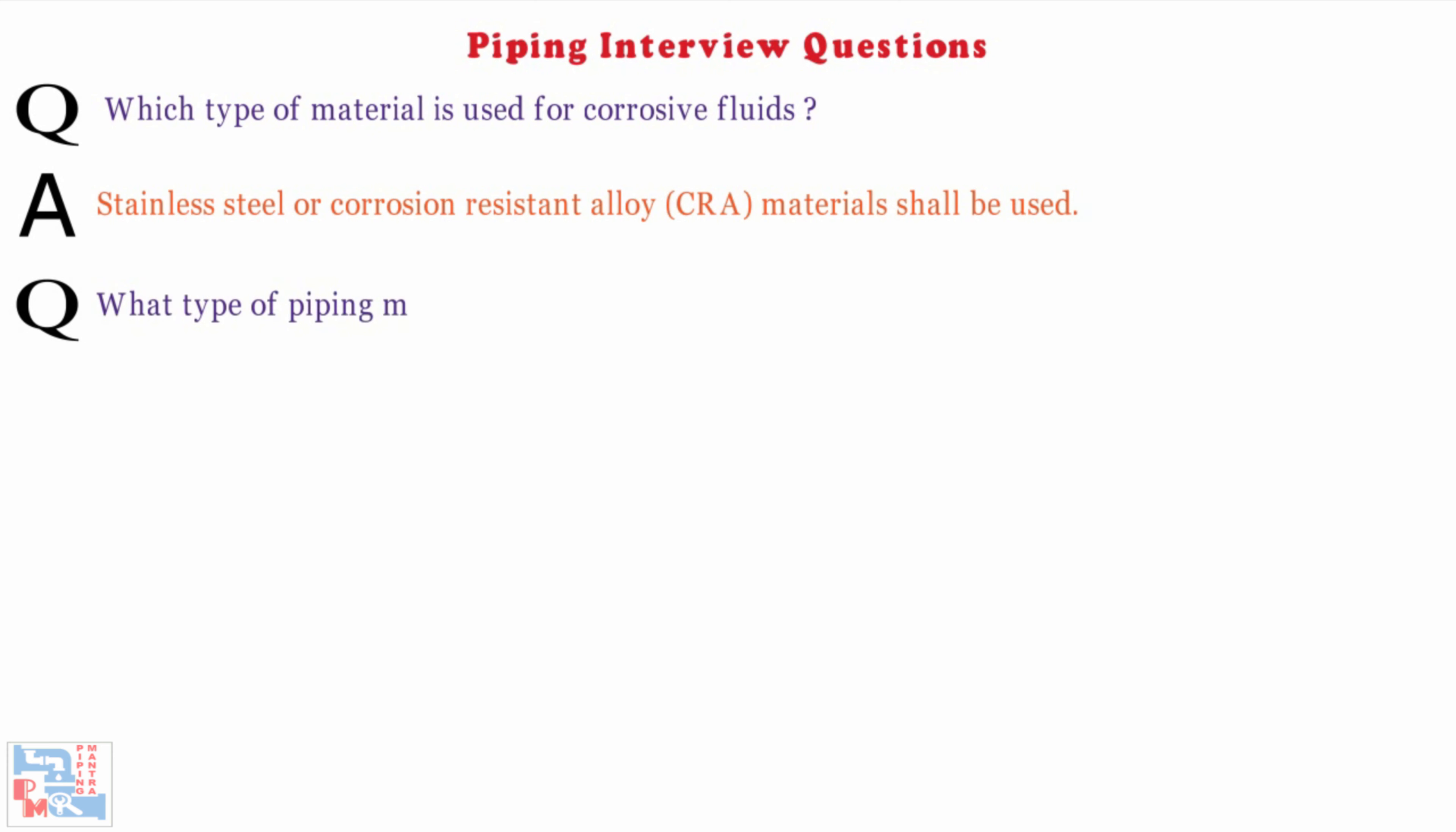Next, what type of piping materials are used for drinking water and instrument air? Galvanized steel or stainless steel materials shall be used for drinking water and instrument air.